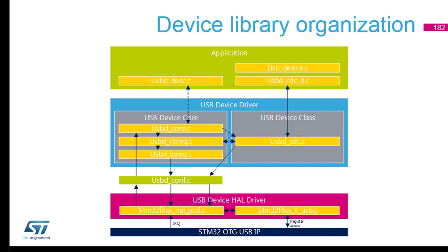We also have usb_device.c, which concentrates all the information about our device — where the interfaces are — and makes the link between different software components. You will see it has a huge structure with pointers on pointers. Then we have usbd_descriptor.c.